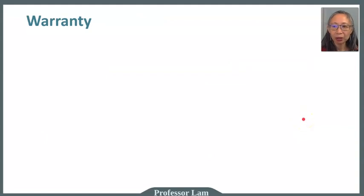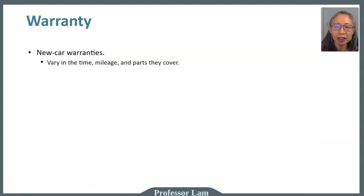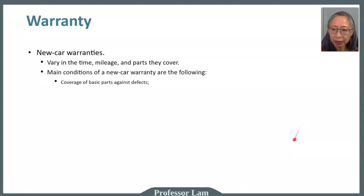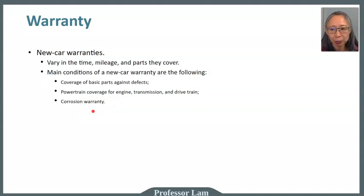For new cars, warranties are given by the manufacturer, and each manufacturer and specific model varies in terms of how long the warranty is valid, mileage covered, and parts covered. Usually the warranty covers basic parts against defects, the powertrain — meaning the engine, transmission, and drivetrain — and corrosion. In the past, rust was a serious problem. For used cars, it's actually regulated by the FTC, the Federal Trade Commission, which requires used car dealers to use a standardized sticker.